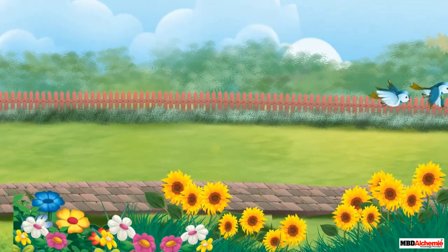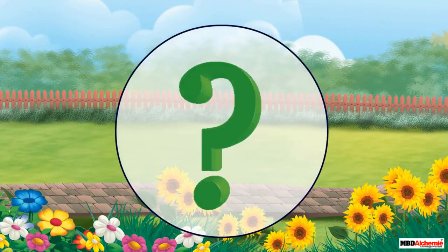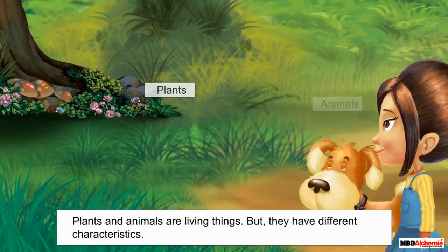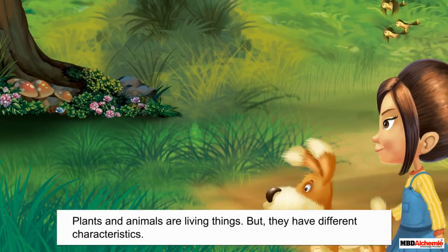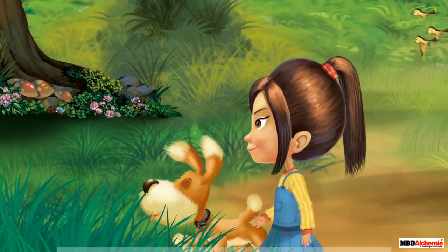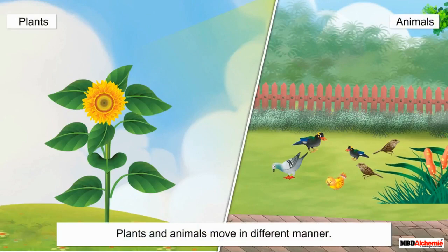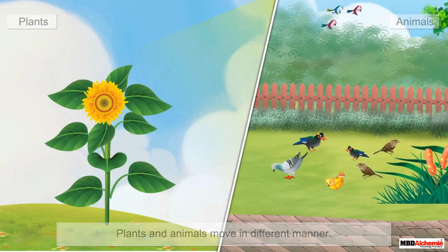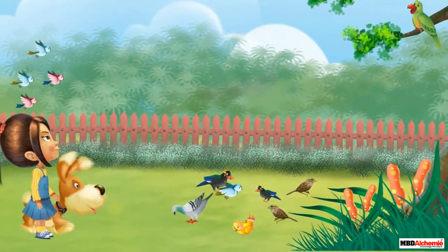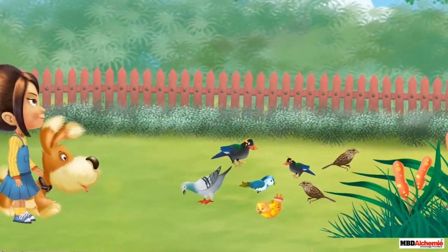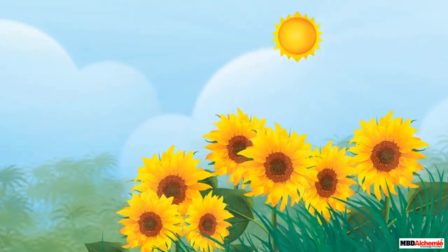Even though they are living things, do you know why? Both plants and animals are living things, but they have different characteristics. Let us discuss these differences. Plants and animals move in a different manner. Animals can move from one place to another; they do so in search of food and shelter.